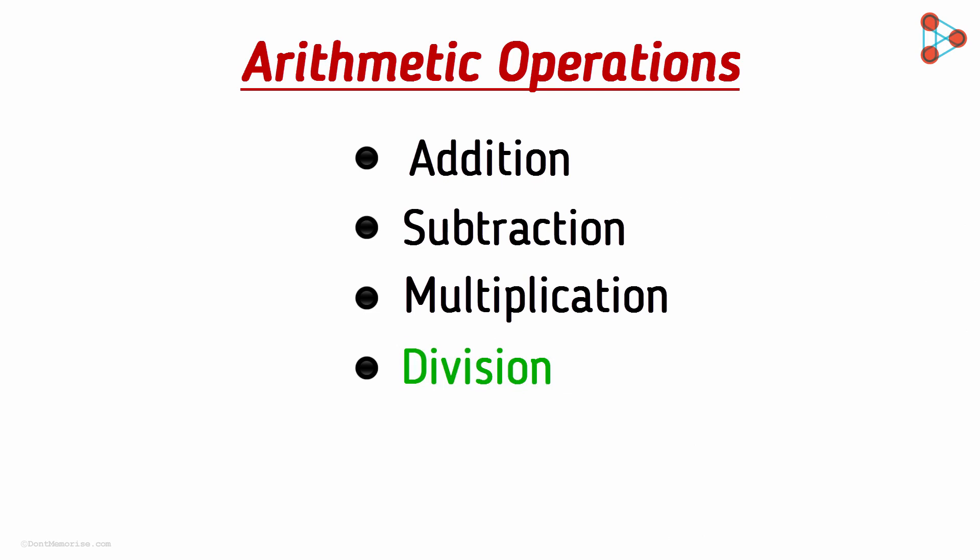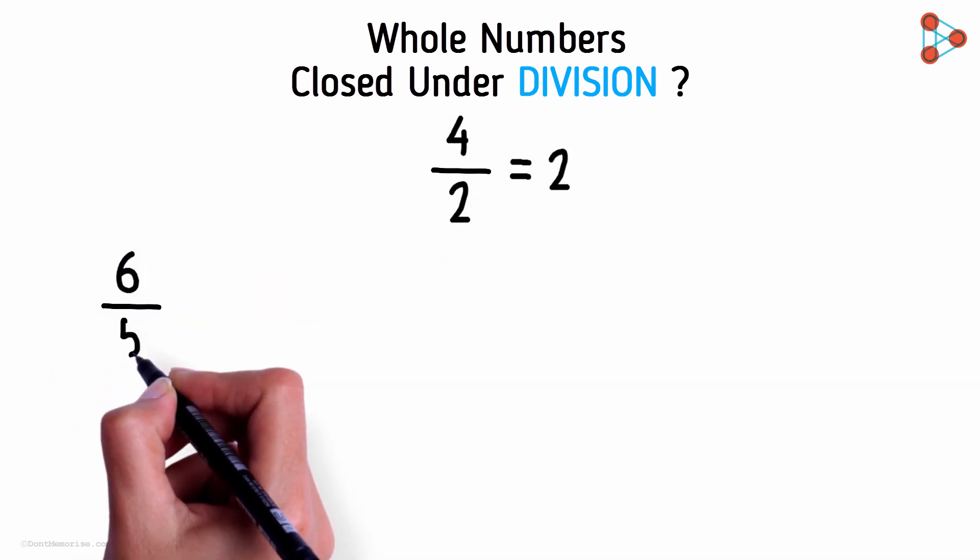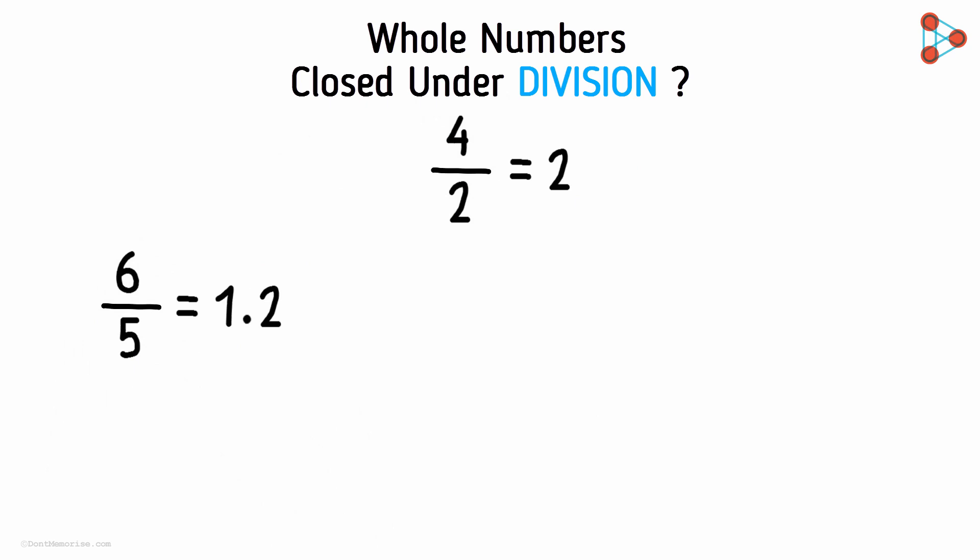I am sure that you must have already guessed the next question that I am going to ask you. Are whole numbers closed under division? 4 and 2 are whole numbers and if we divide 4 by 2, we get a whole number again. But if we divide 6 by 5, the answer we will get will be in decimals which is not a whole number.